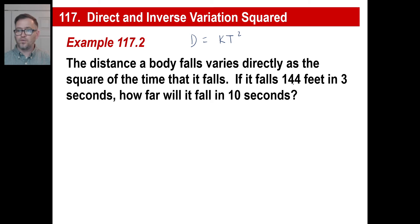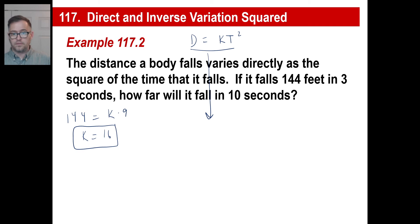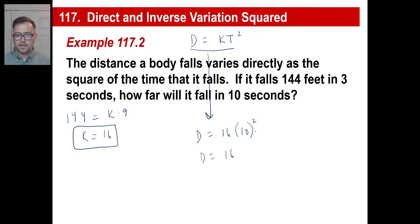If it falls 144 feet in three seconds, let's fill in the blanks. The distance is 144 feet in three seconds. We don't know K, but three seconds is the time that's going to be squared, so K times nine. 144 divided by nine is 16 — there we have our K. How far will it fall? We don't know D in 10 seconds. K is 16, so we'll put 16 and then 10 seconds squared. D equals 16 times 10 squared, which is 100. So 16 times 100.